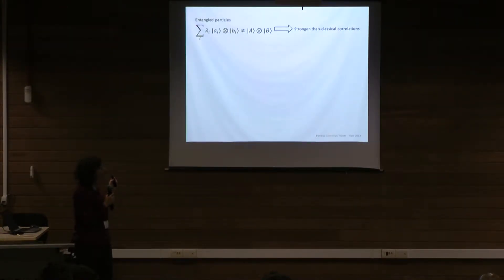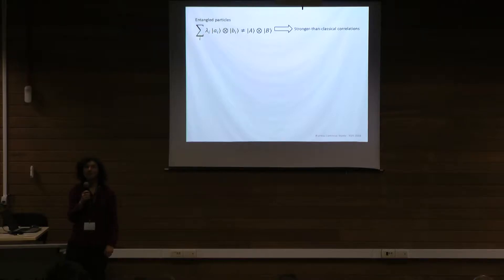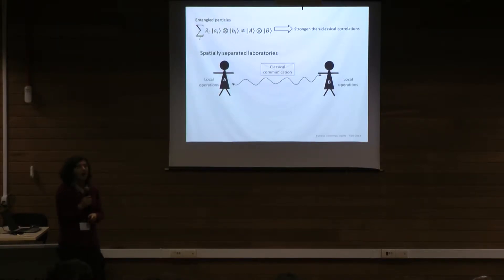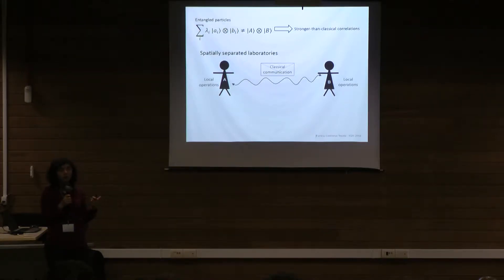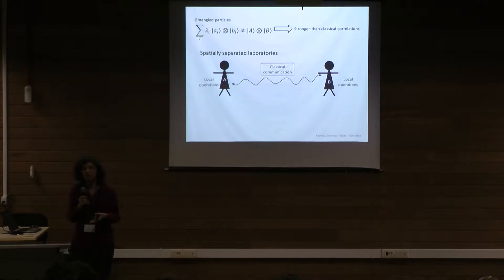We know that entanglement is useful because it gives us stronger than classical correlations and we can use these for many applications like transmitting information efficiently and communicating. We can't create these correlations in spatially separated laboratories, and we usually use local operations and classical communication as the paradigm of the things we can do in spatially separated laboratories.